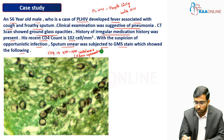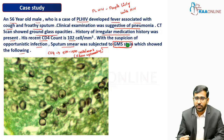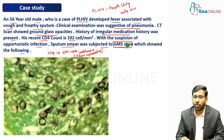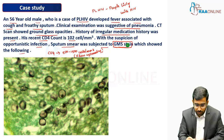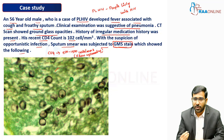The sputum was subjected to GMS staining. When learning about this staining method, it is important to know the principle. In Gomori Methenamine Silver staining, you are able to see a green background, and the fungal organism appears in dark brown to black color.